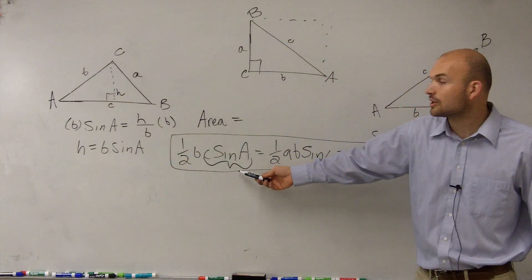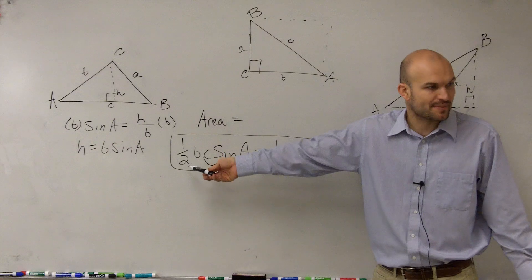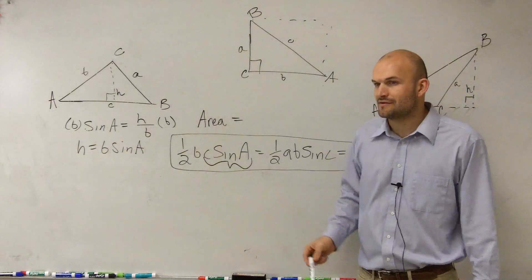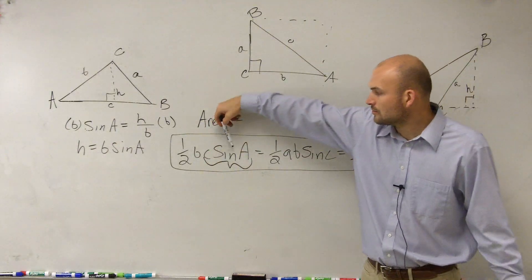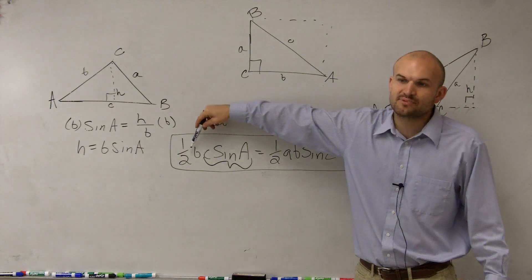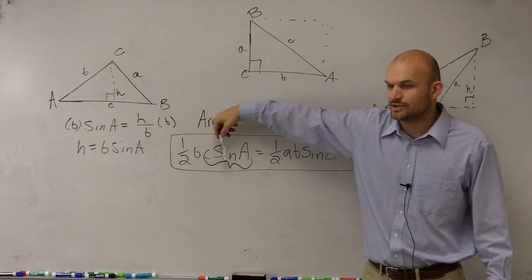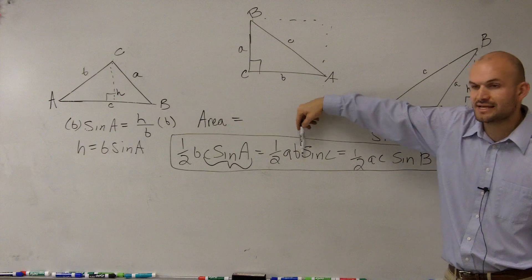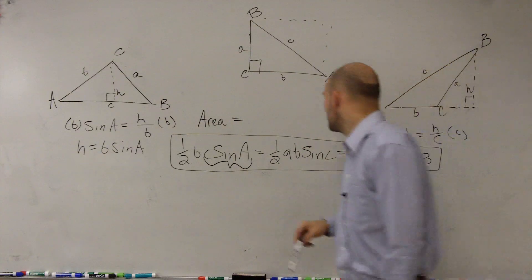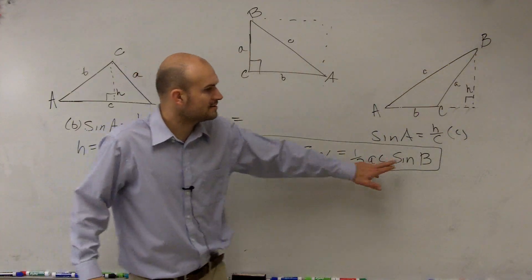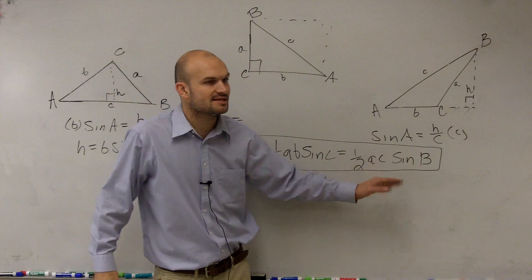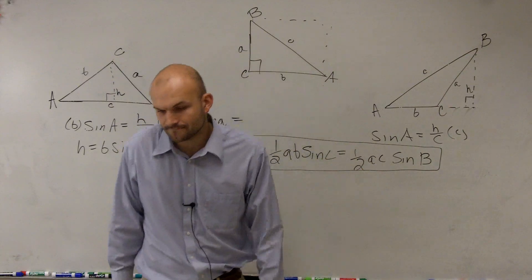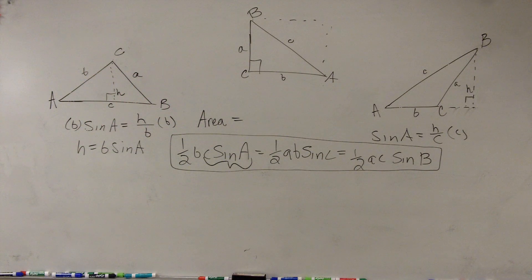So that represents your height, times it by b, which you could represent as your base, times one half. So if you're given a triangle with an angle a and side lengths b and c, then you use this one. If you're given a triangle with an angle of c, side lengths a and b, use this one. And if you're given a triangle with your angle b and side lengths a and c, use that formula. Okay? Yeah.